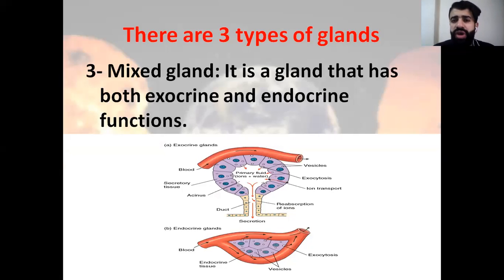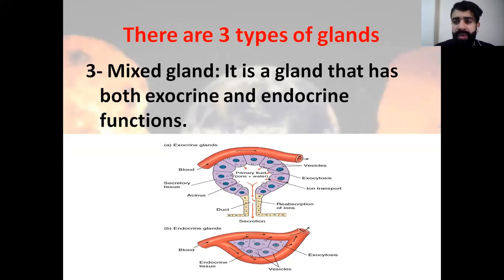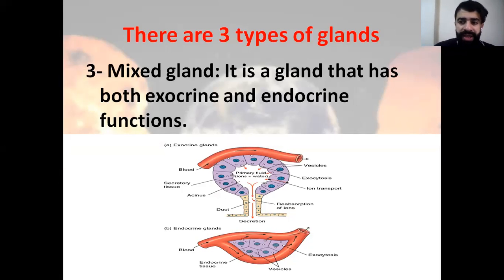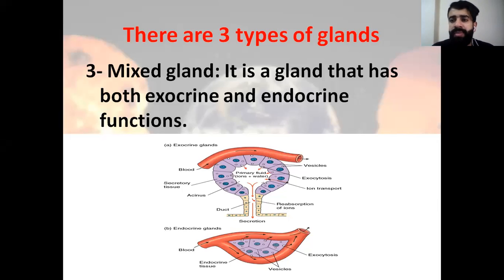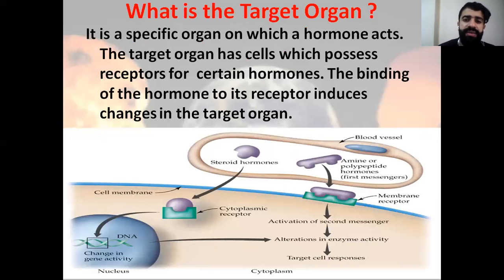There are three types of glands. The third type is the mixed gland. The pancreas is a mixed gland — between the endocrine by secreting insulin and the exocrine by secreting pancreatic juice.